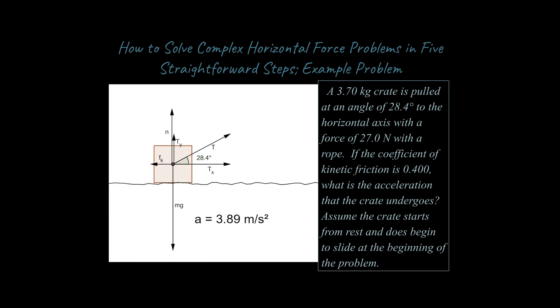I'll put a link down in the comments below, using the actual given values that we're going to be using for this problem. The information is on the right as well. We've got a crate being pulled at an angle, sliding across a horizontal surface. We know what the coefficient of kinetic friction is. The problem is asking for the acceleration that the crate undergoes. We're going to assume the crate starts from rest and does begin to slide at the beginning of the problem, so we're dealing with kinetic friction, not static friction.